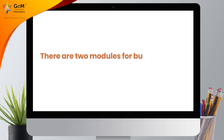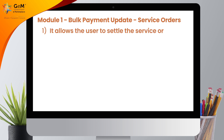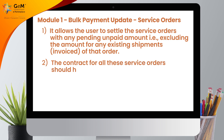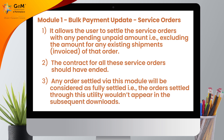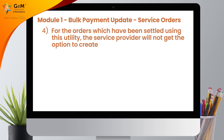There are two modules for bulk payment update. Module 1: Bulk Payment Update Service Orders. It allows the user to settle the service orders with any pending unpaid amount, excluding the amount for any existing shipments invoiced of that order. The contract for all these service orders should have ended. Any order settled via this module will be considered as fully settled; the orders settled through this utility would not appear in subsequent downloads. For orders settled using this utility, the service provider will not get the option to create any fresh invoices.